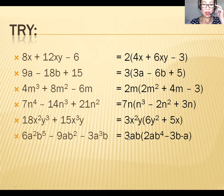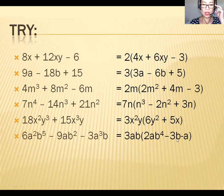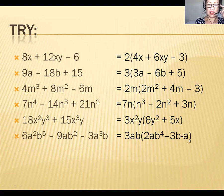Dividing the first term by 3ab: 9 ÷ 3 = 3; cancel out a (a ÷ a = 1, so it's not written); b² ÷ b = b, giving 3b. When you divide 3a³b by 3ab you subtract exponents: a³ ÷ a = a², b ÷ b = 1, giving negative a². And b5 ÷ b = b⁴, so 2ab⁴ for the first term.